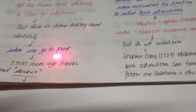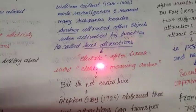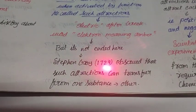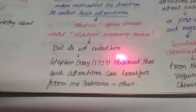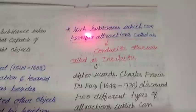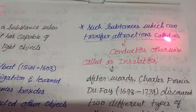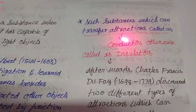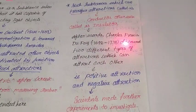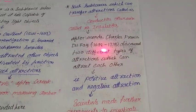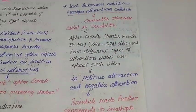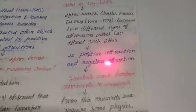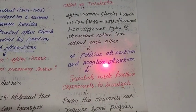William Gilbert, 1544 to 1603, made investigations and he learned many substances beyond amber attract other objects when activated by friction. He called such attractions as electric, after the Greek word electron, which means amber. In this way, we got the electric name from amber. Remember, students, but it is not ended here.